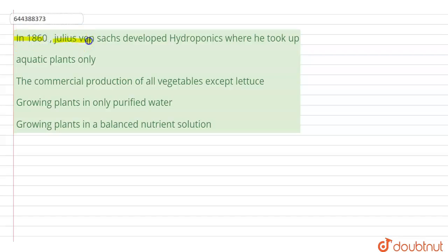Students, the question here says that in 1860, the name of the scientist is Julius von Sachs. He developed hydroponics where he took up which of the following?